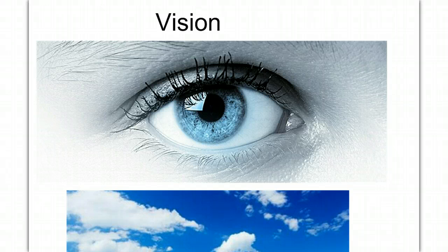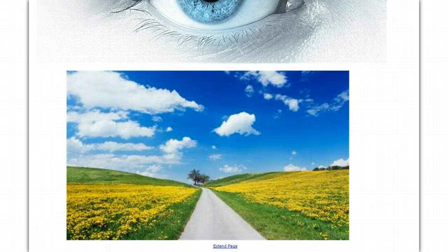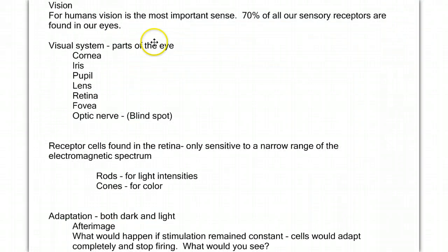So we'll start with vision. The visual system in human beings is our dominant sensory system, meaning if we have a discrepancy between, for example, what we hear and what we see, our brain will usually go with what we see. Seventy percent of all of our sensory receptors as human beings are found in the eye, so we can see that it's our dominant system.